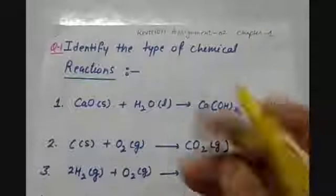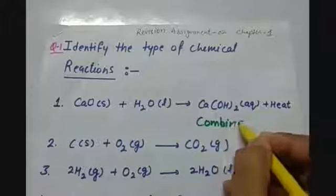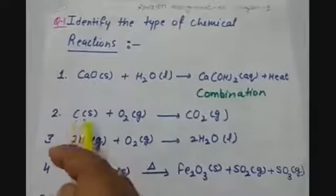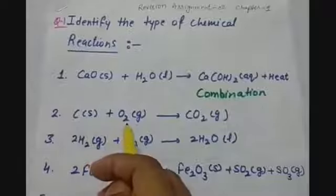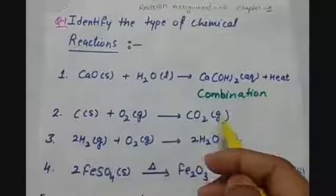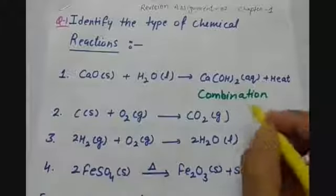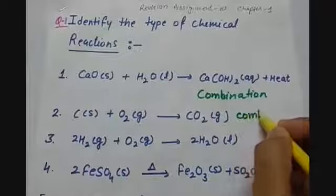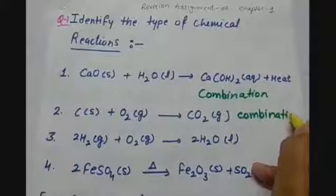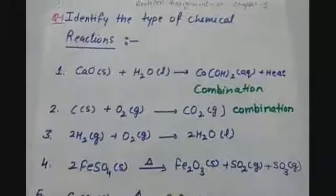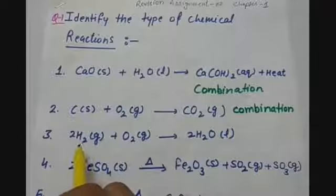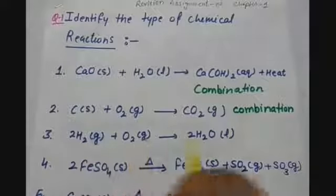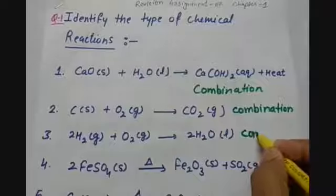So we can write here that this is a combination reaction. Next, carbon burns in the presence of oxygen and forms carbon dioxide. So this is one kind of combustion, but carbon is combining with oxygen to form carbon dioxide, so this is also combination — and under combination, this is the combustion reaction of carbon. Then we have the combustion reaction of hydrogen, that is formation of water. When hydrogen gas reacts with oxygen gas it forms water, so this is also a combination reaction.